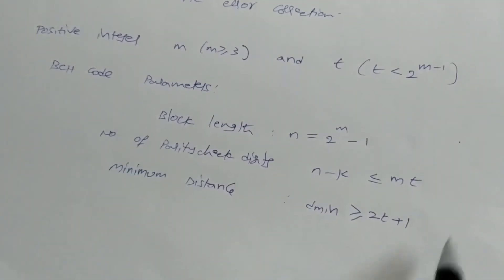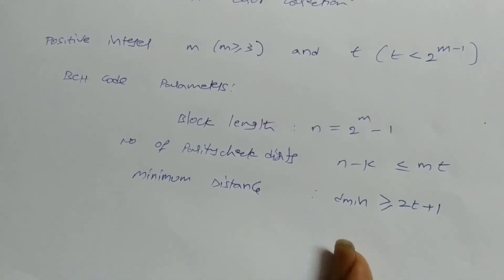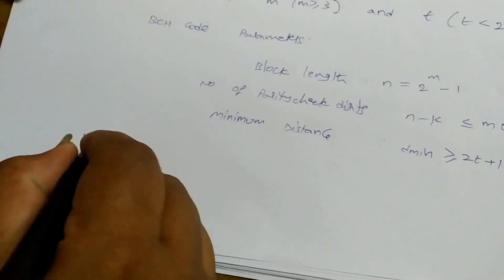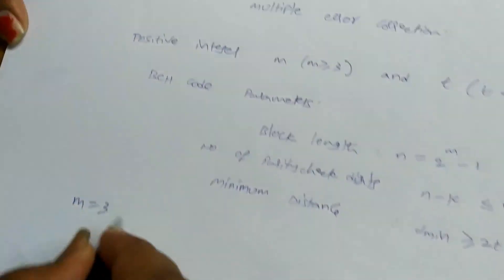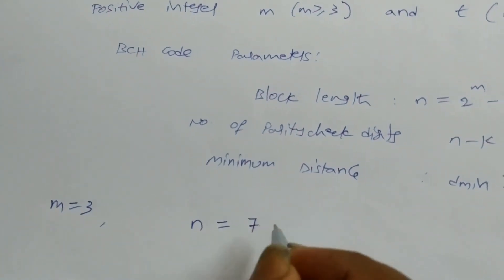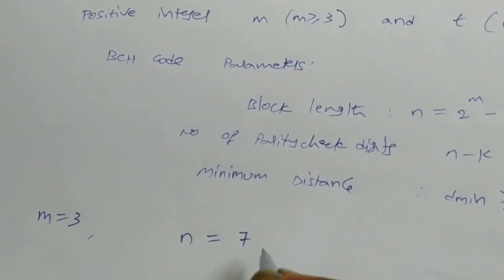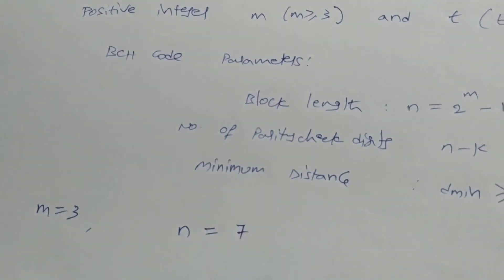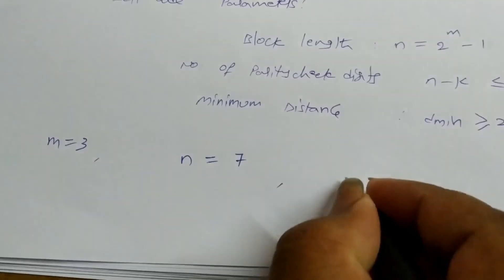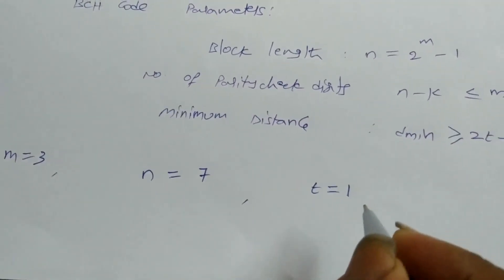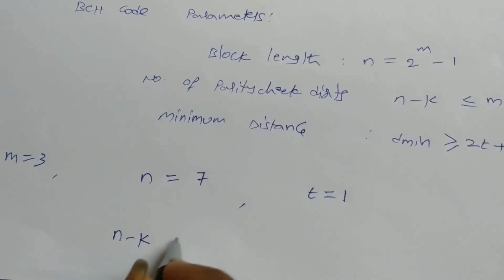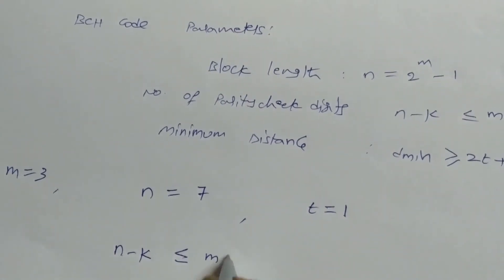Now let's discuss these parameters with an example. If we take m equal to 3, then n must be 7. How many errors can we correct? If t is equal to 1, then n minus k — the number of parity check bits — must be less than or equal to m times t, which is 3 times 1.